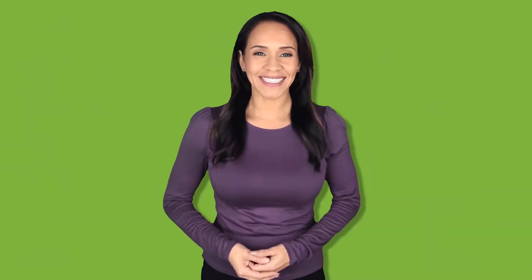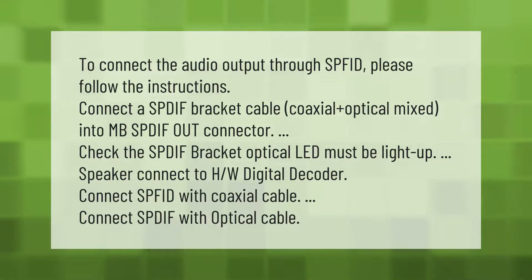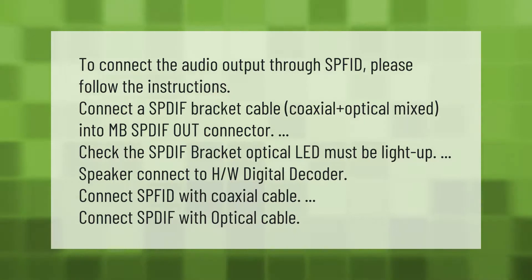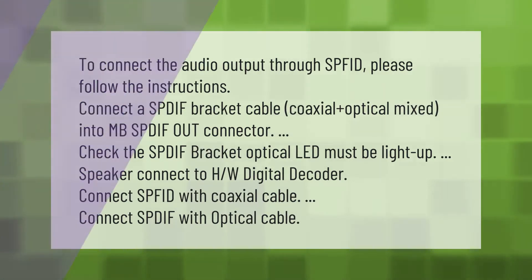To connect the audio output through S-P-D-I-F, please follow the instructions: connect to the S-P-D-I-F bracket cable (coaxial plus optical) mixed into the S-P-D-I-F out connector. Check that the S-P-D-I-F bracket optical LED is lit up. Connect to the hardware digital decoder using either a coaxial cable or an optical cable.